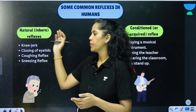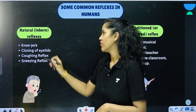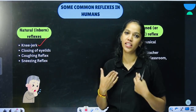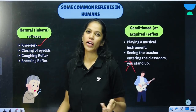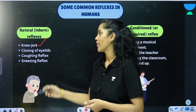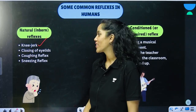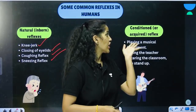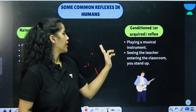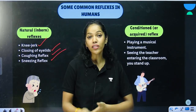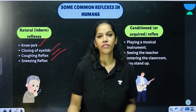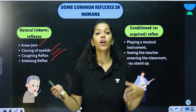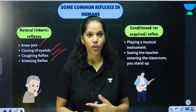Some common reflexes in humans: natural inborn reflexes include the knee jerk — like hitting your knee on a cot — closing of eyelids, coughing, and sneezing. Conditioned or acquired reflexes include playing a musical instrument, or standing upright when you see the teacher entering the classroom. These are common reflexes you encounter in day-to-day life.